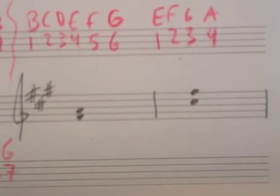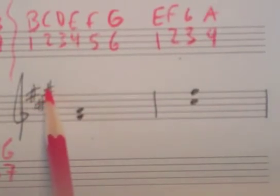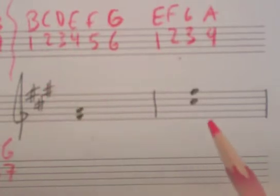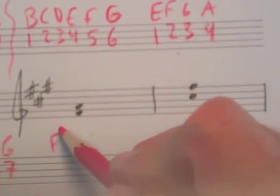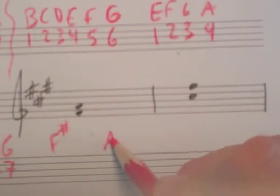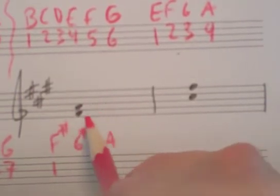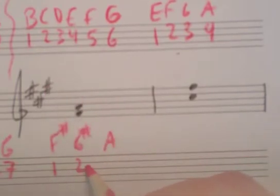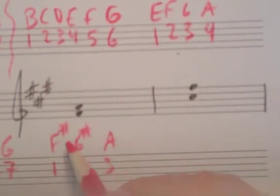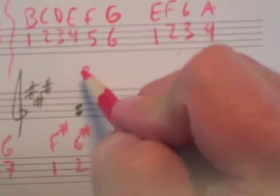Now we're in the key signature of A major. We know that because the last sharp is half a step under the tonic, so G-sharp, you go up a half step, that would be A. So here we have F-sharp to A. F-sharp is 1, G-sharp because of the key signature is 2, and A is 3. So F-sharp to A is some sort of third.